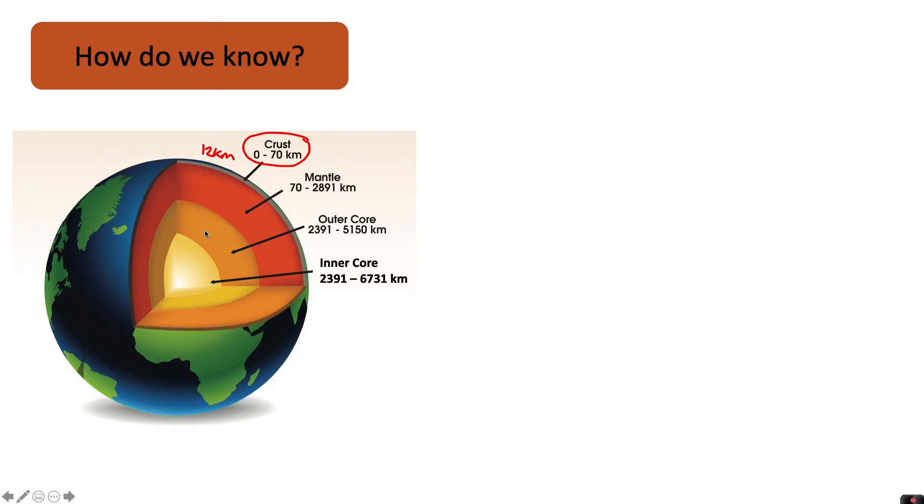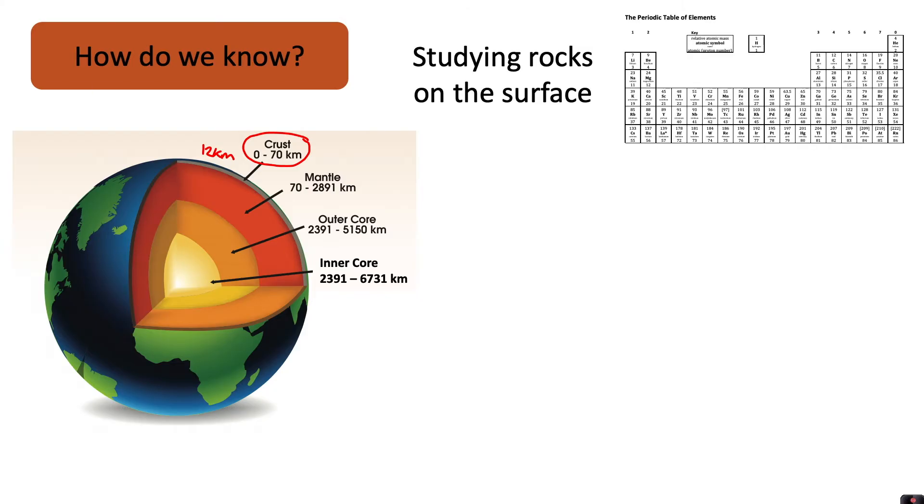There's three main pieces of evidence that scientists look at. First of all, they study the rocks on the surface. That tells us a lot about the structure of the Earth and what elements exist on Earth.